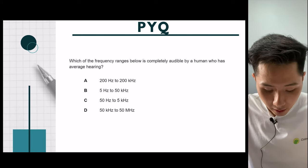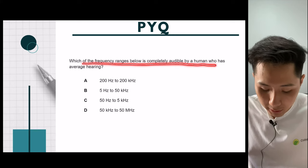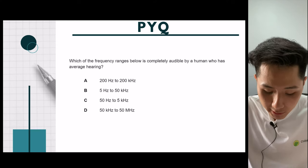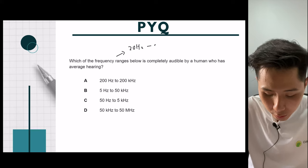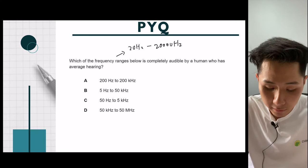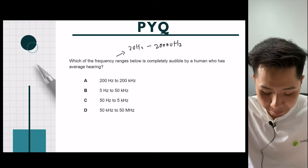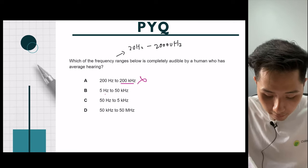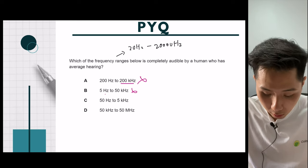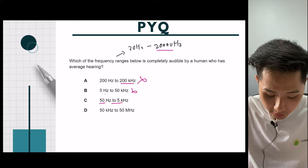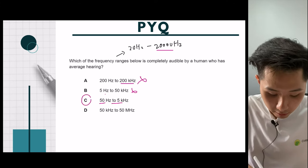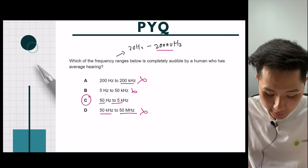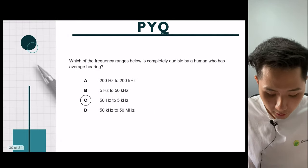Let's look into some practice questions before we end this video. Which of the frequency ranges is completely audible by a human? We know that the frequency of sound that we can hear is from 20 hertz to 20,000 hertz. So we just have to pick the answer which matches the range. 200 to 200k, we cannot listen to 200k, this is wrong. 5 hertz to 50,000, which is also wrong, because the most we can hear is 20,000. 50 hertz to 5k, that will be correct. That will be the range we can hear. Number four will be 50k to 50 million, so this is also not what we are looking for. The answer is C.